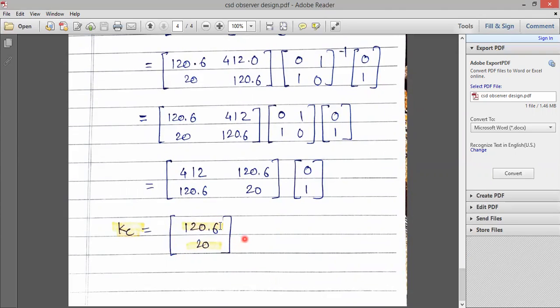So, using all three methods, we got the same observer value as the observer gain matrix. Hope you understand how to design the state observer using three different methods. Thank you.